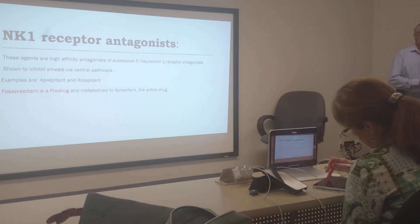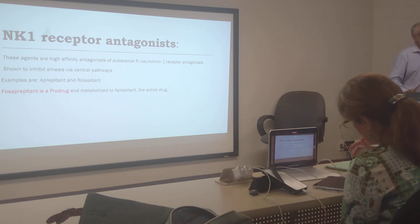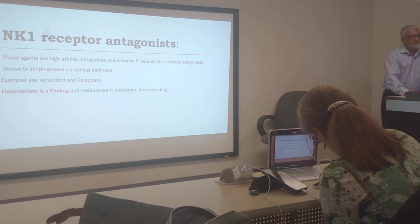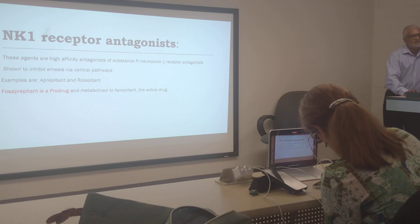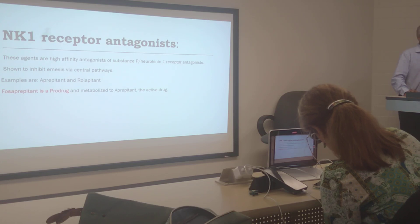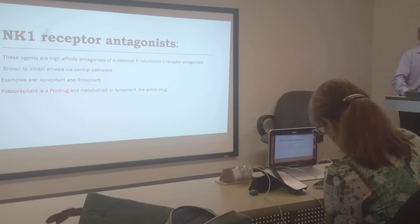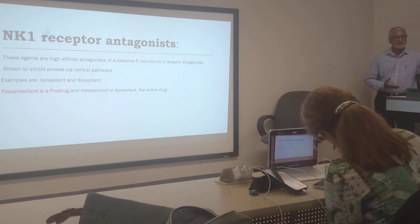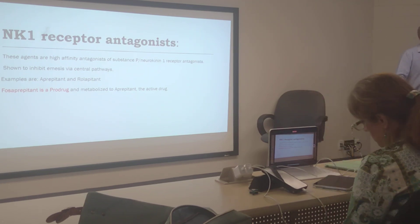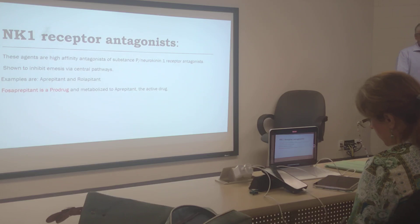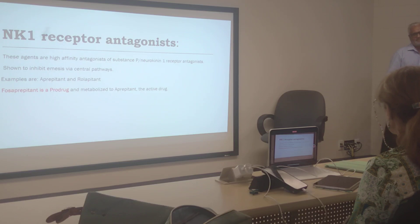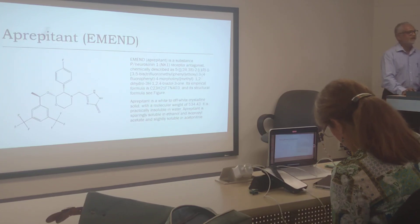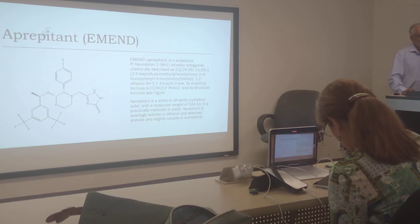We have NK1 receptor antagonists — these are neurokinin-1 receptor antagonists. They are shown to inhibit vomiting. They are centrally located. NK1, substance P, and NK1 receptors are centrally located. Examples are aprepitant and rolapitant. These are active drugs. They come from fosaprepitant, which is a pro-drug. So you take fosaprepitant, it becomes aprepitant — the active drug — through metabolism.